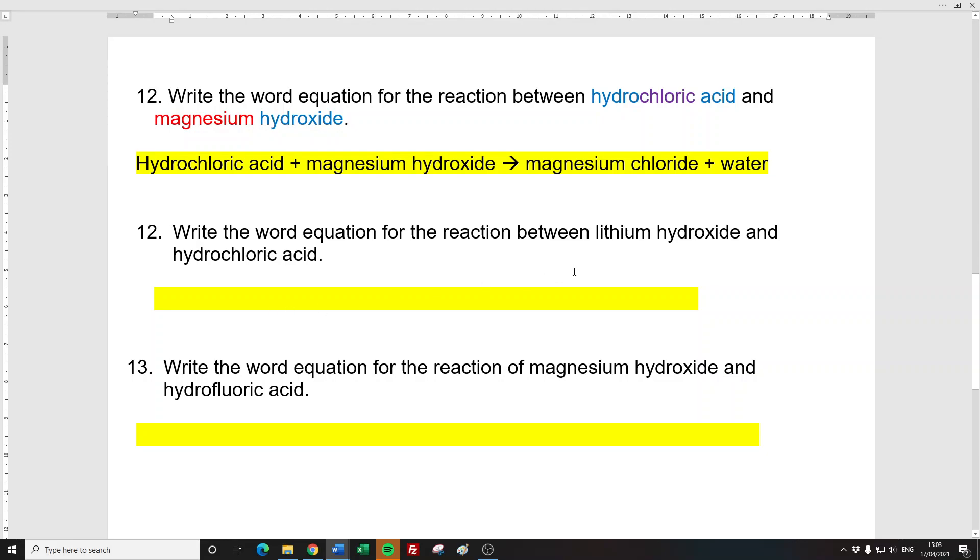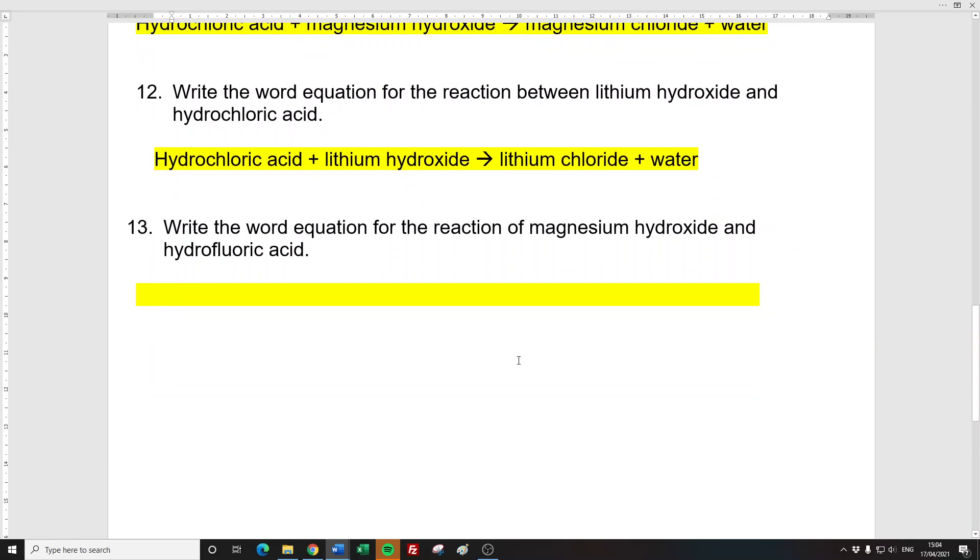Right. So, these two on the left, either way around, doesn't matter. Then you've got your arrow. And then you've got the word lithium here. So, you need lithium there. And you've got chloric over there. So, it must be chloride. And then you always get water. And then lastly, these two are going to be on the left. Arrow, changing in two. You know you've got water.